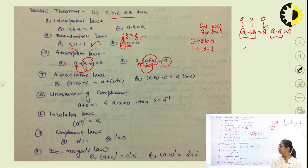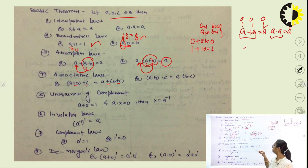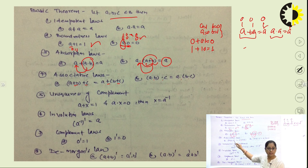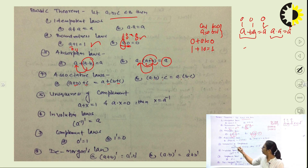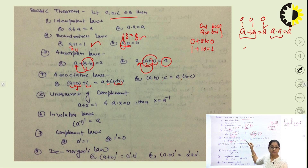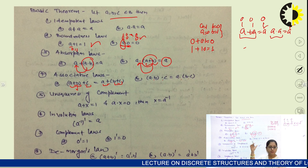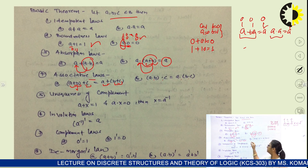The next law is the associative law. In associative law we use the same operator throughout — if we use addition, we use addition throughout; if we use multiplication, we use multiplication throughout. In the distributive law we use two different operators together. This is the key difference between associative law and distributive law. Whatever the values of a, b, c across all 8 combinations, the result is the same, which is why we call it the associative law.